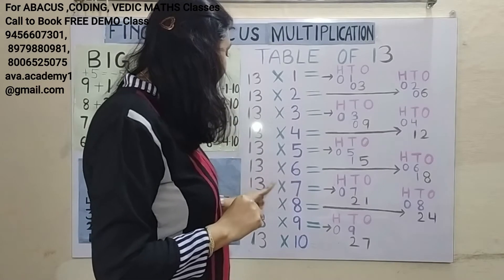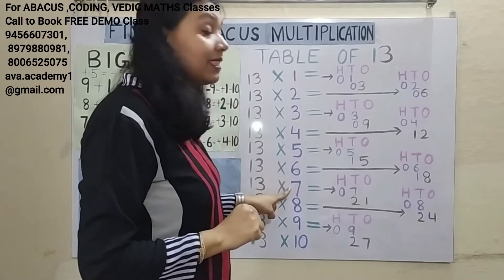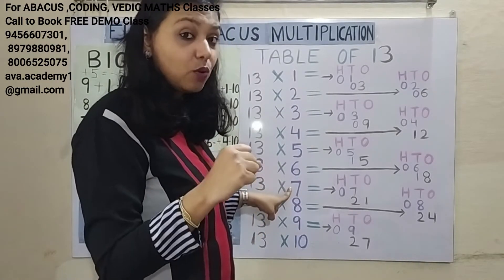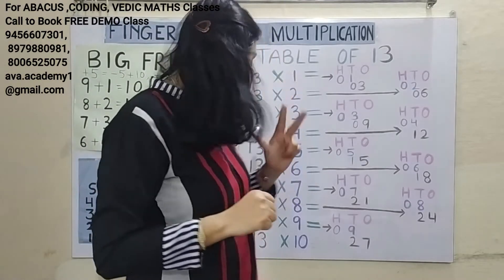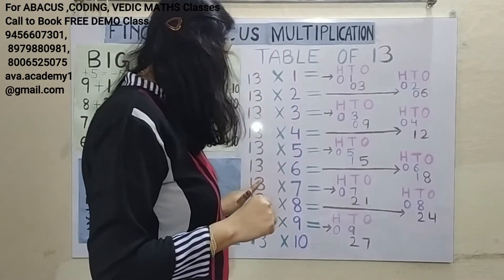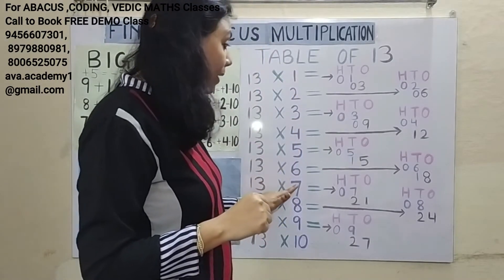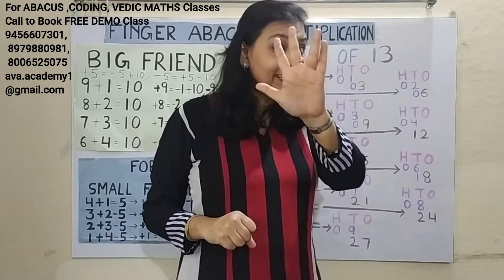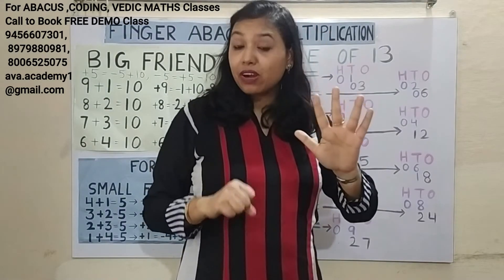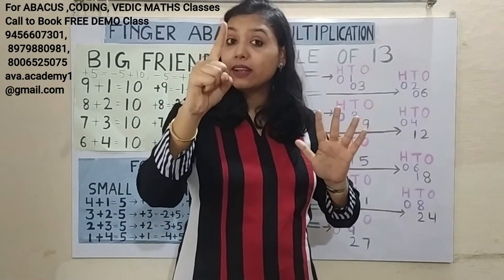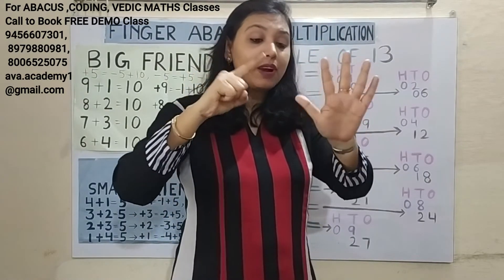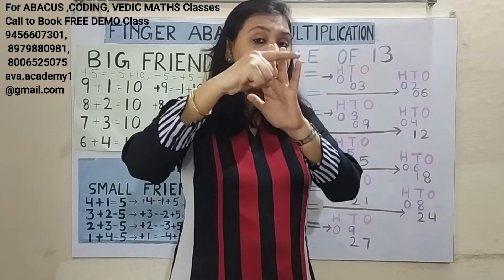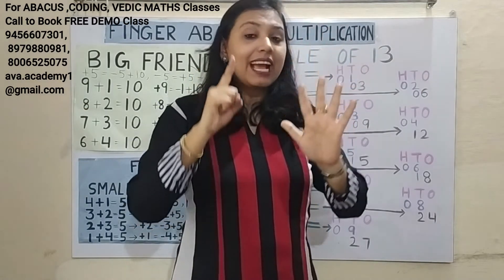Next, 13 sevens: 1 seven is 7. In 100s: 0. In 10s: 7. 3 sevens are 21. In 10s: 20. In 1s: 1. Answer is 91.